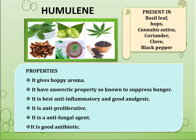Humulene is a sesquiterpene also known as alpha-humulene and alpha-caryophyllene — it is an isomer of beta-caryophyllene. Humulene is found in basil leaves, hops, Cannabis sativa, coriander, clove, black pepper, etc. It is what gives beer its distinct hoppy aroma. Humulene is commonly known to suppress hunger — it has an anorectic property, suppressing the appetite, making it a potential weight loss tool. It has also commonly been blended with beta-caryophyllene and used as a major remedy for inflammation.